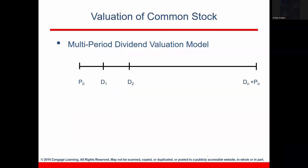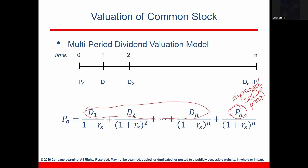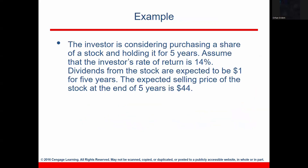In more complex and realistic scenarios there are multiple periods — two, three, four, or five. In these cases we discount every single dividend plus the expected selling price at period N. All the D terms represent dividends, and the final term is the expected selling price. Let's look at an example to illustrate this.